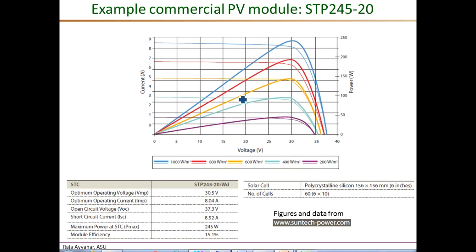These are current versus voltage and power versus voltage curves from a typical commercial PV module, which appears to correspond to a 245-watt peak power module. In later videos, we will look at how to use the information in datasheets and these experimental I-V curves to estimate the model parameters, which are not explicitly given in datasheets.